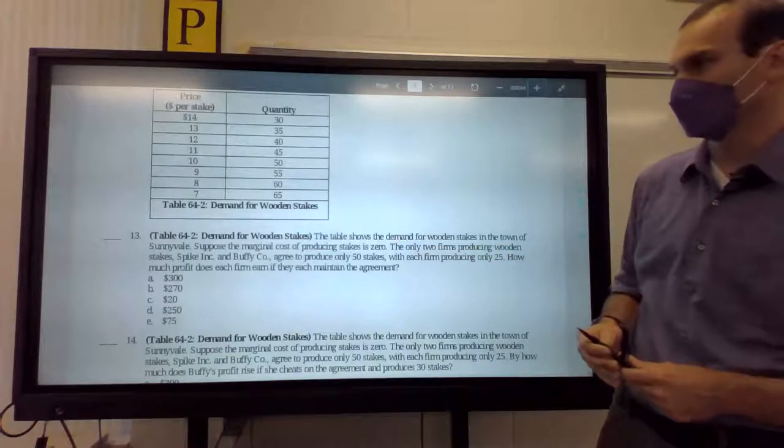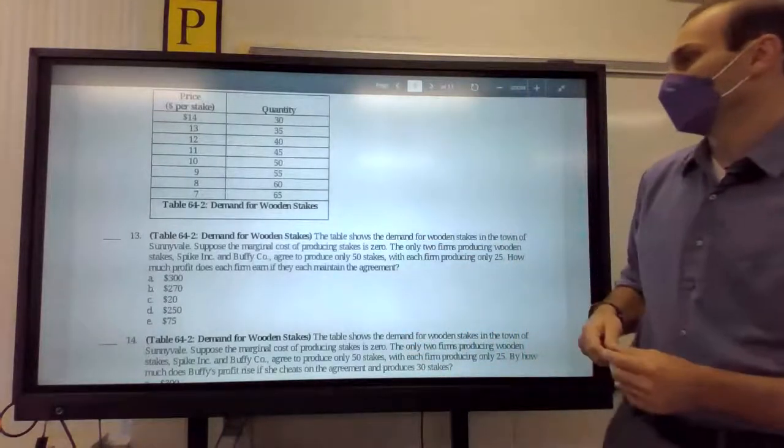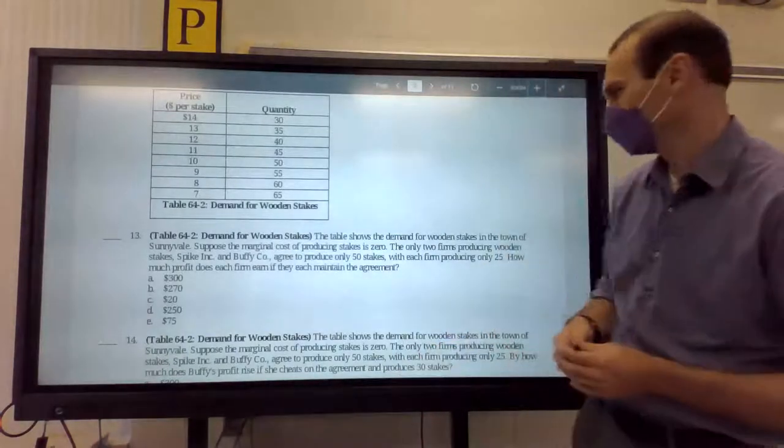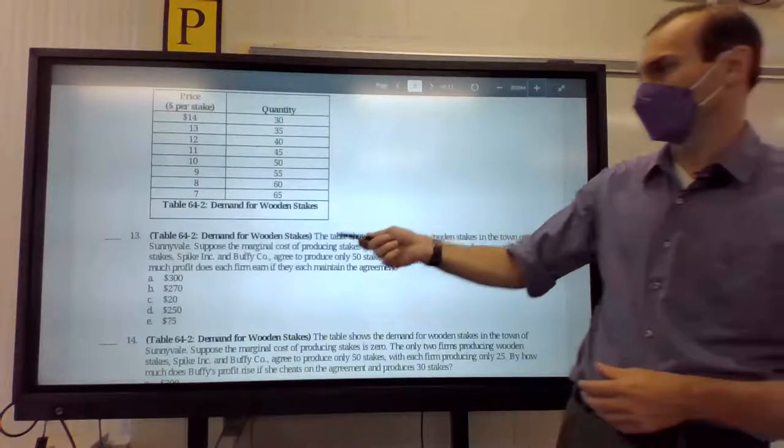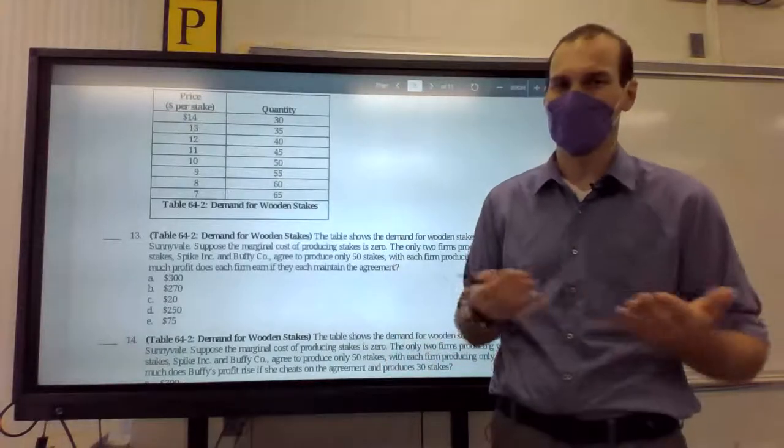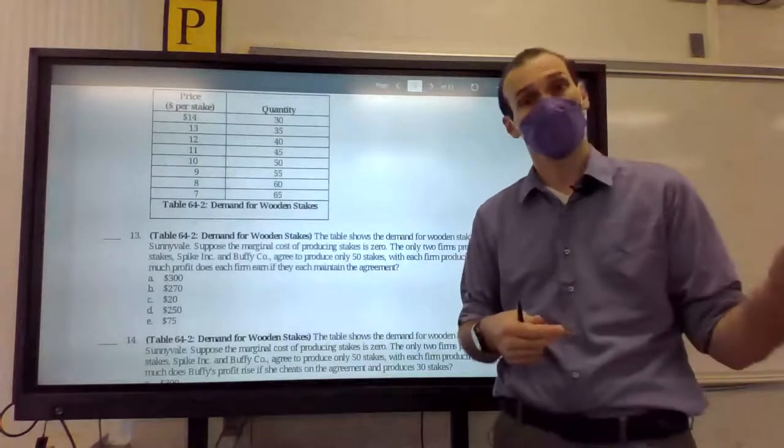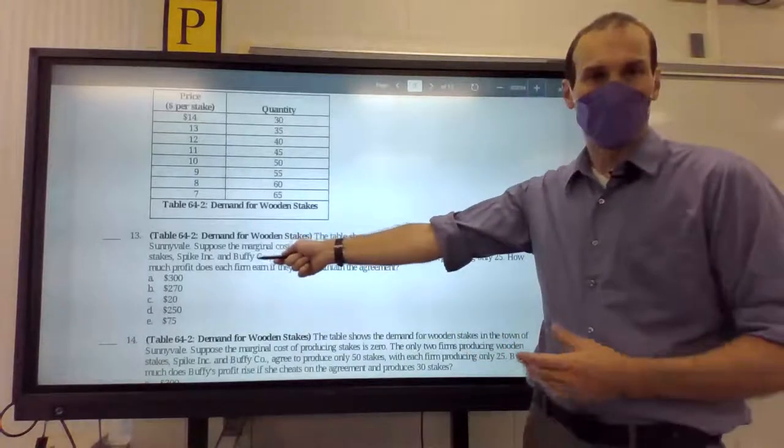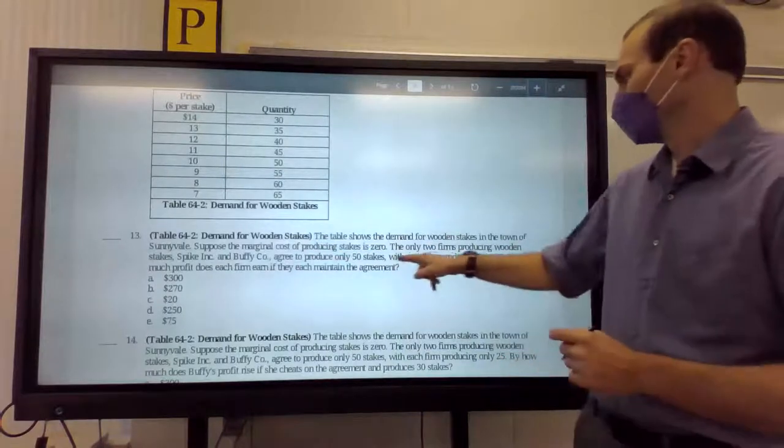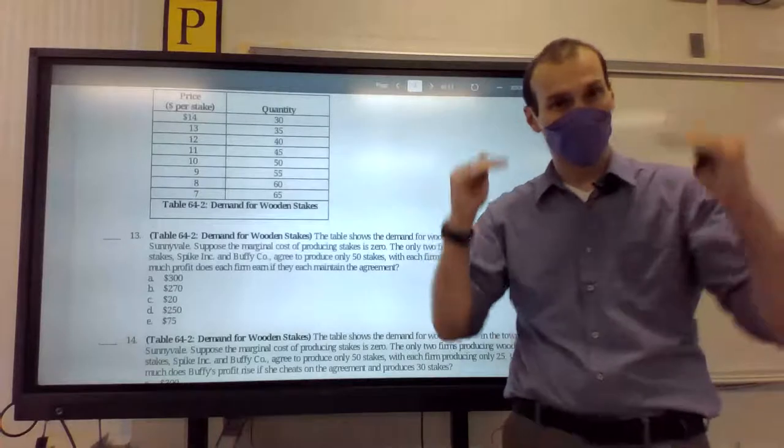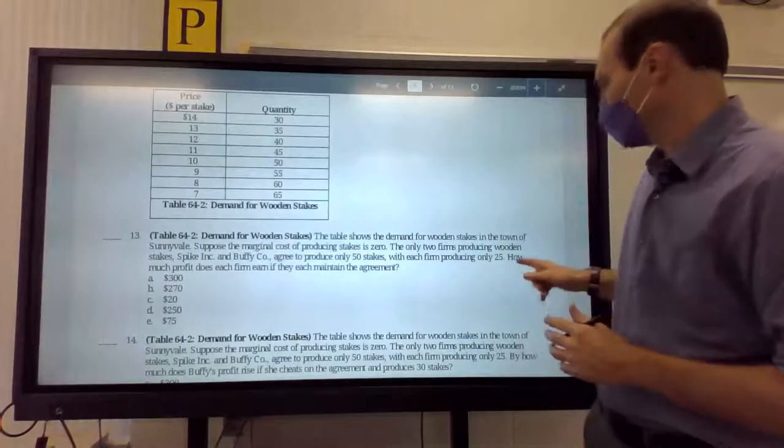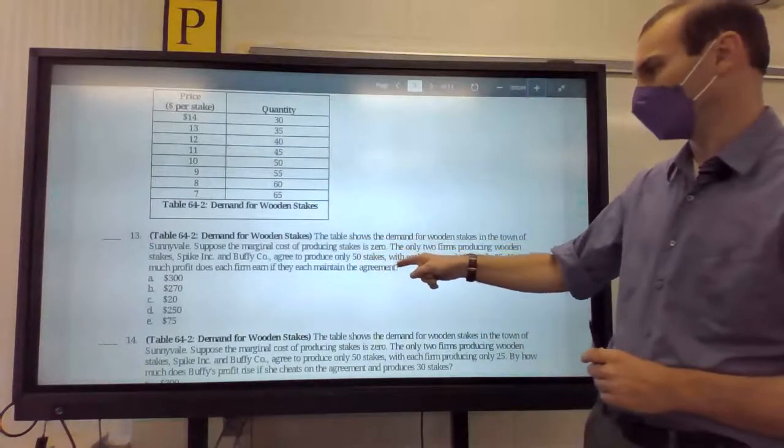The table shows the demand for wooden stakes in the town of Sunnydale. That's where the show took place. Suppose the marginal cost of producing stakes is zero. Wooden stakes. Buffy the Vampire Slayer. Get it? All right. For wooden stakes, Spike Co. Now, you might say spikes. Like a wooden stake. You know, Spike was one of the main vampire characters in Buffy. And then I had a weight chip without falling out. And then he got his own spin-off. All right. So, Buffy, main character. They agree to produce only 50 wooden stakes. Okay. With each firm producing only 25. So, he's saying we'll reduce our production, make 25. And we'll go ahead and try to profit maximize.